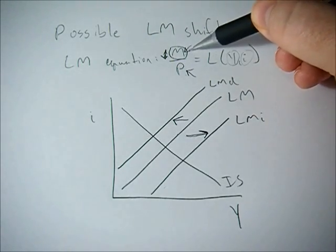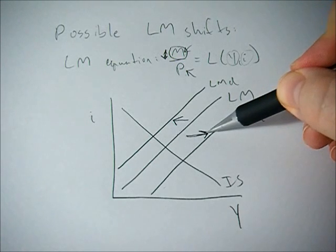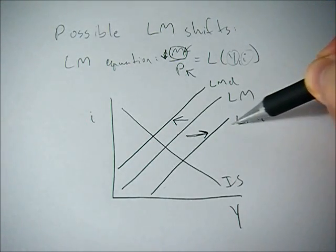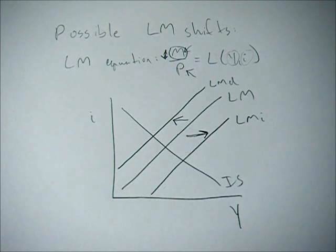So that sort of technological change will increase or shift right the LM curve because there's more money available to consumers even though the physical amount hasn't changed.